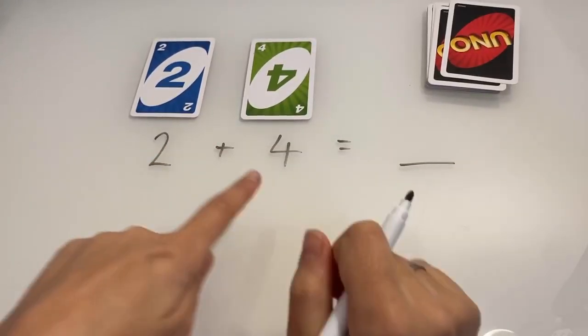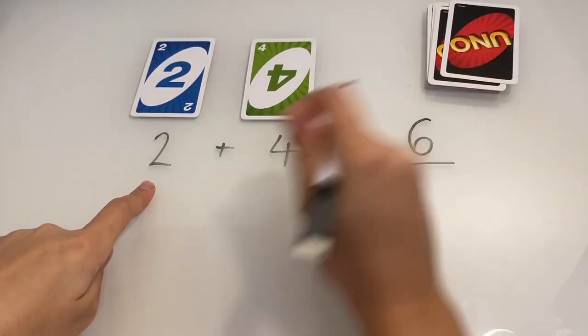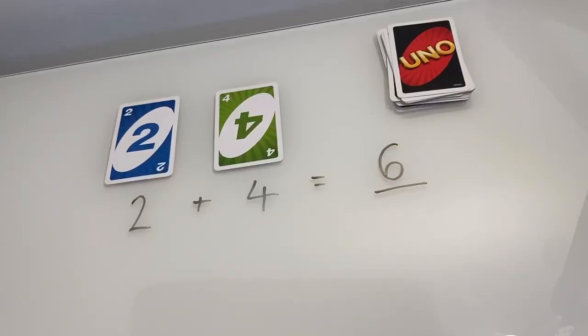So four, and then we count two more. So four, five, six. So our answer, two plus four equals six.